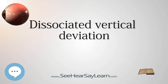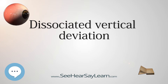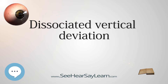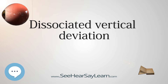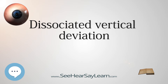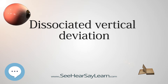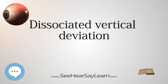Dissociated Vertical Deviation, DVD, is an eye condition which occurs in association with strabismus, typically infantile esotropia. The exact cause is unknown, although it is logical to assume it is from faulty innervation of eye muscles.